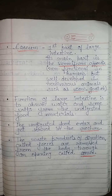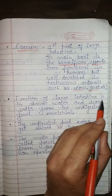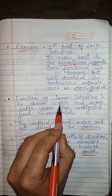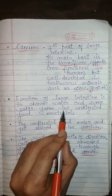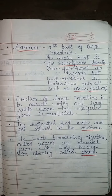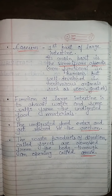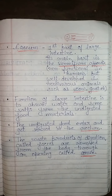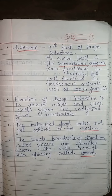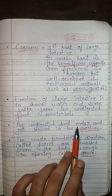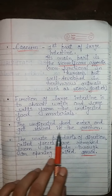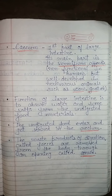But herbivorous animals mein iska bahut bada role hota hai. Function of large intestine is to absorb water and some salts from the undigested food material. Means aapke large intestine mein jo material aata hai, woh undigested aur unabsorbed hota hai. Uske andar se kuch important water ya salts wahan se absorb kar leti hai aapki large intestine.